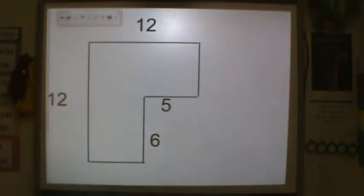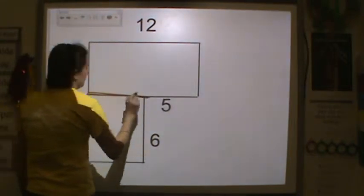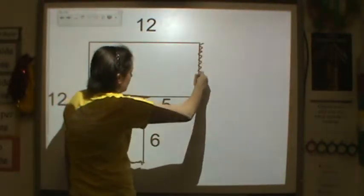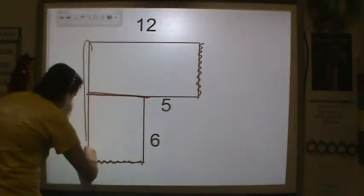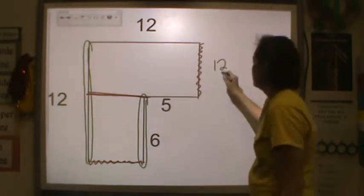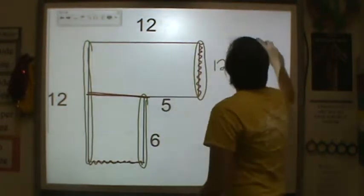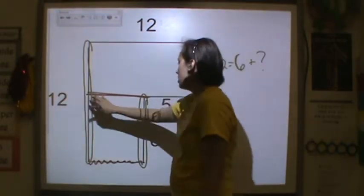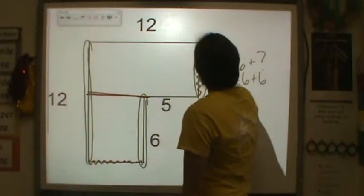Let's try another one. The first step is to break the shape, so I'm going to break it right here — now I have two rectangles. The next step was to find any missing sides. Remember, your lengths and widths are going to add up to be the same value. The big long side is 12, and the opposite side is 6 plus a missing side. So 12 is equal to 6 plus 6, meaning this missing side is equal to 6.